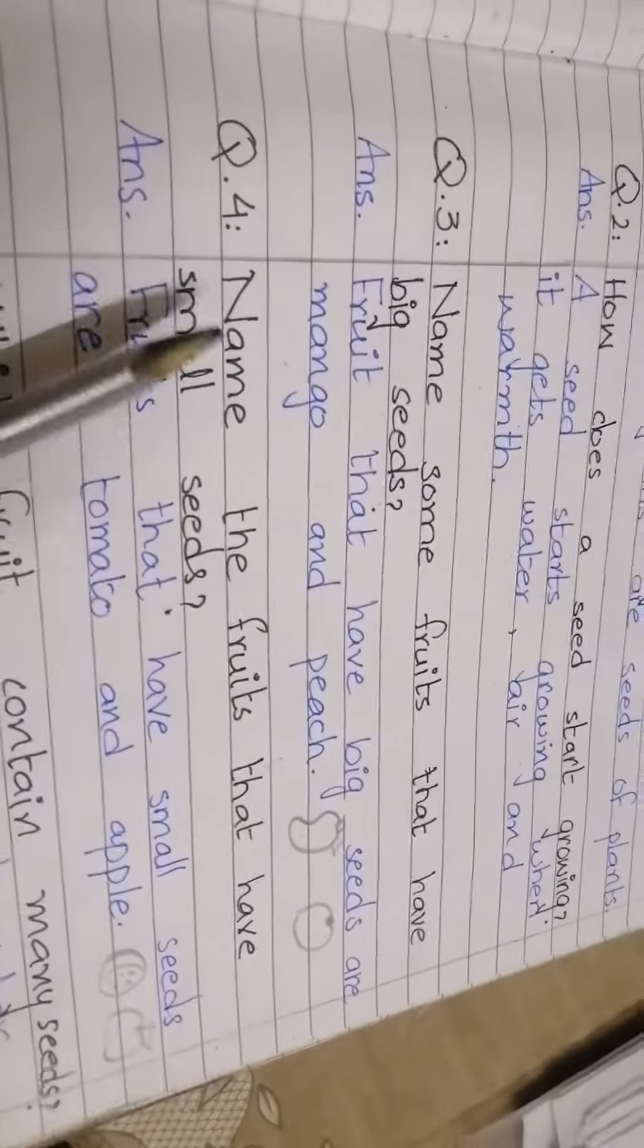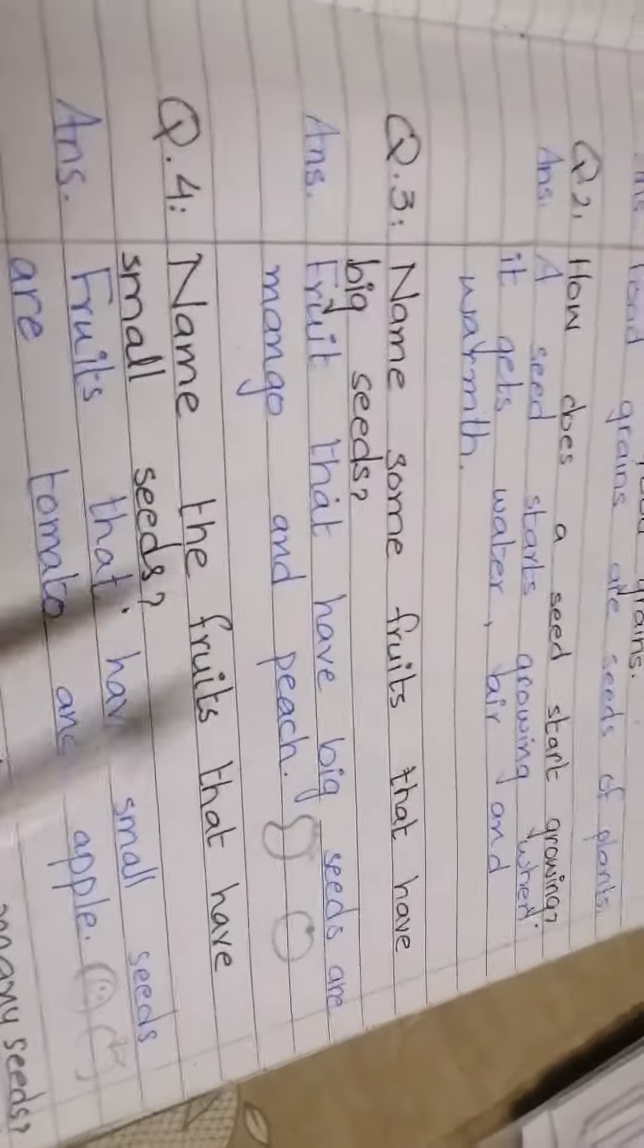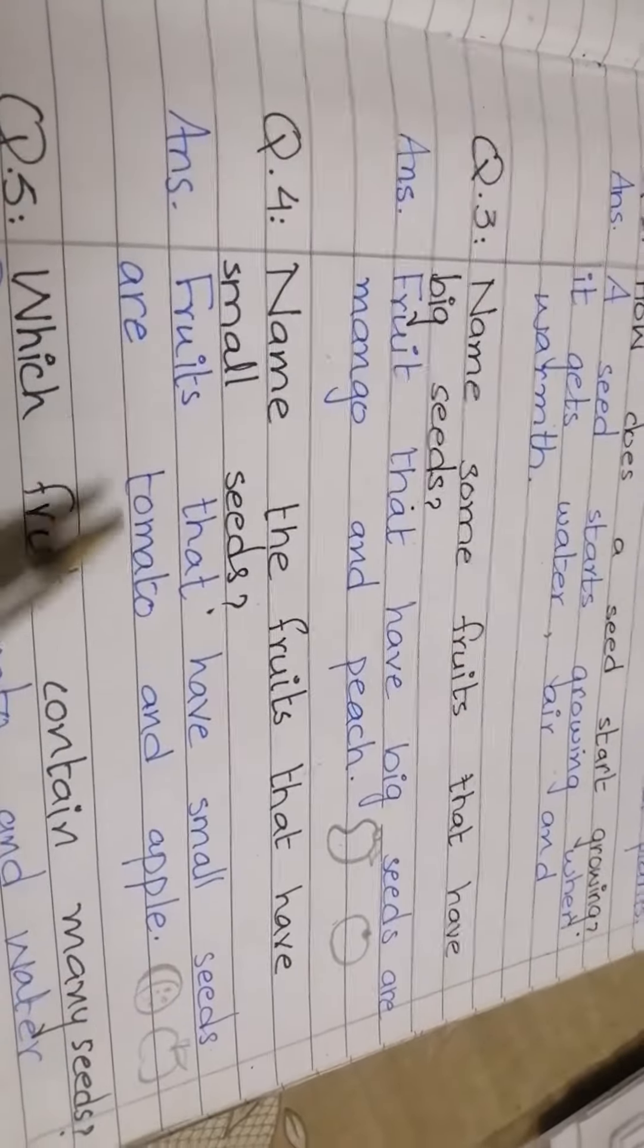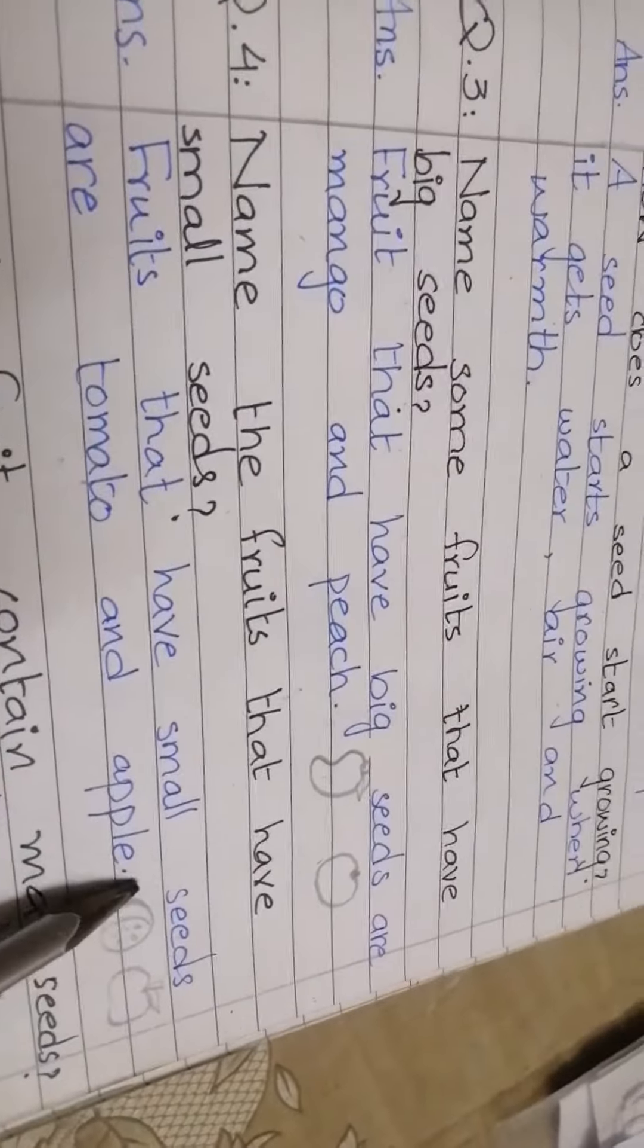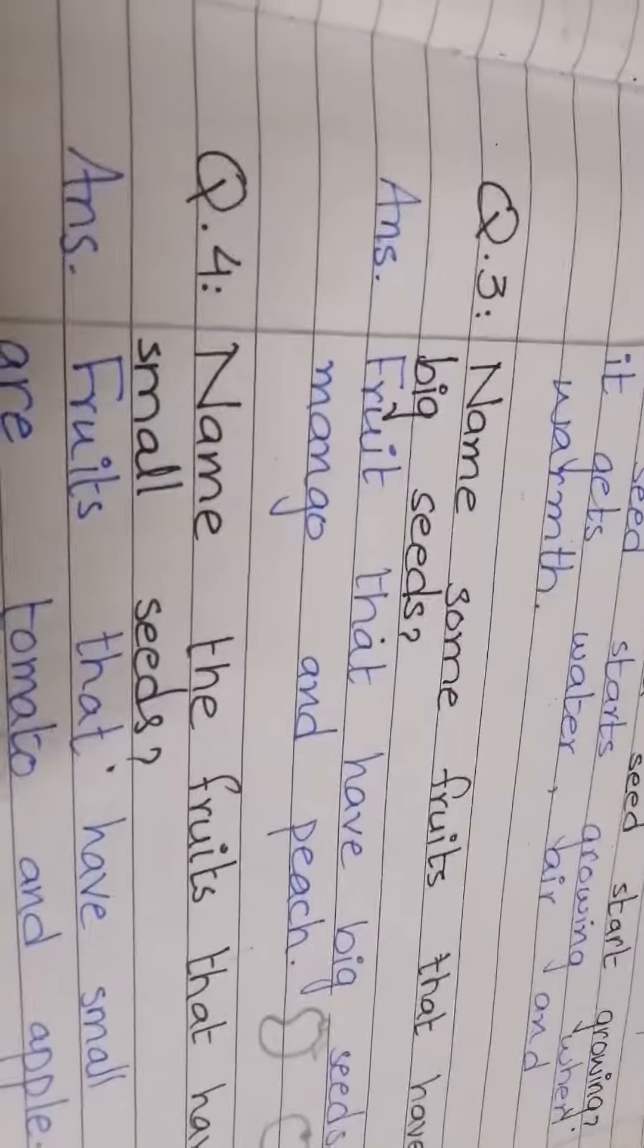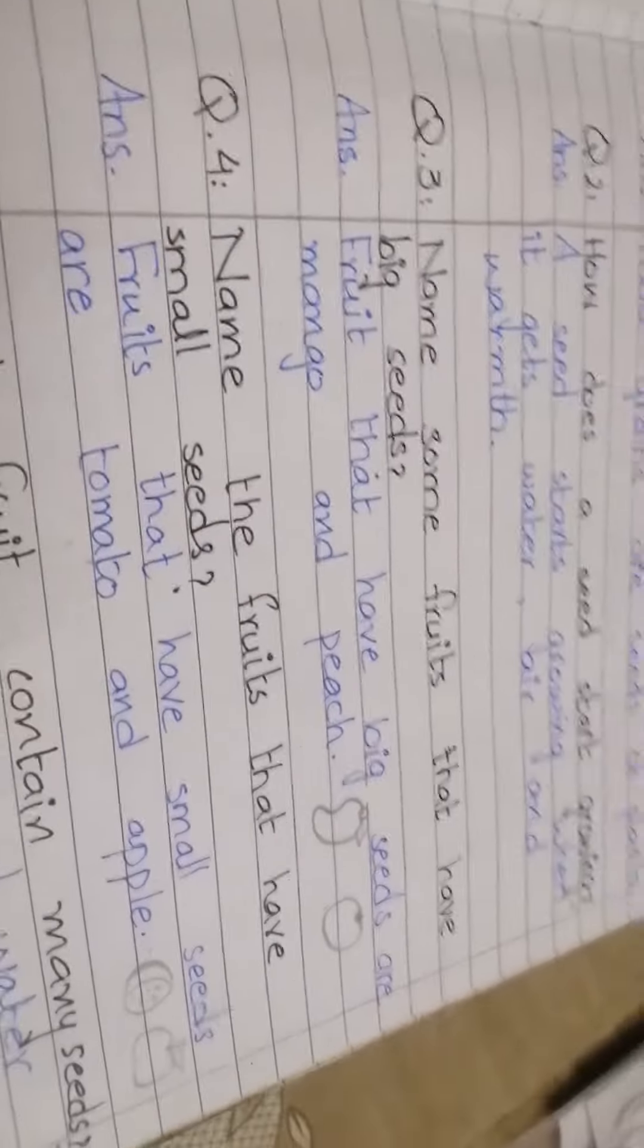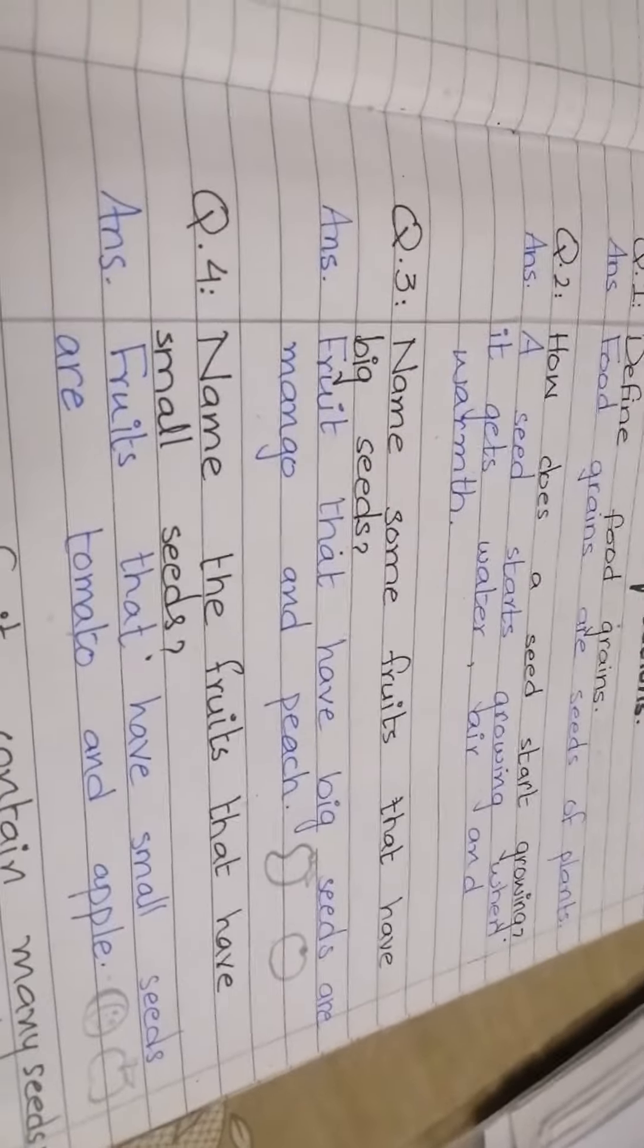Question number 4: Name fruits that have small seeds. Tomato and apple have small seeds. If you cut them in your kitchen, you will see that the seeds are very small. If you have mangoes today, you can observe how they have big seeds for comparison.